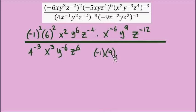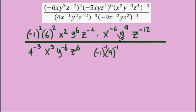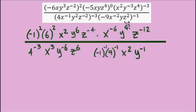For the last set of parentheses in the denominator, I see another negative coefficient. So negative 9 becomes negative 1 times 9, and each one gets an exponent of negative 1. Moving on to the variables: x to the power of negative 2 times negative 1 gives x to the power of positive 2, y to the power of negative 1, and z to the power of negative 2.